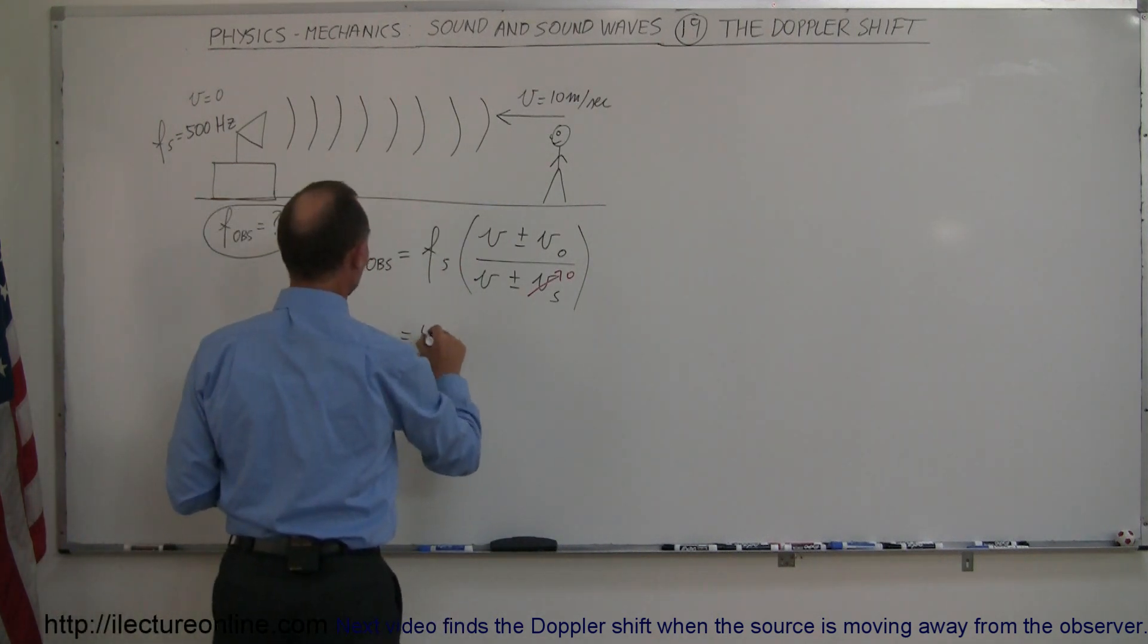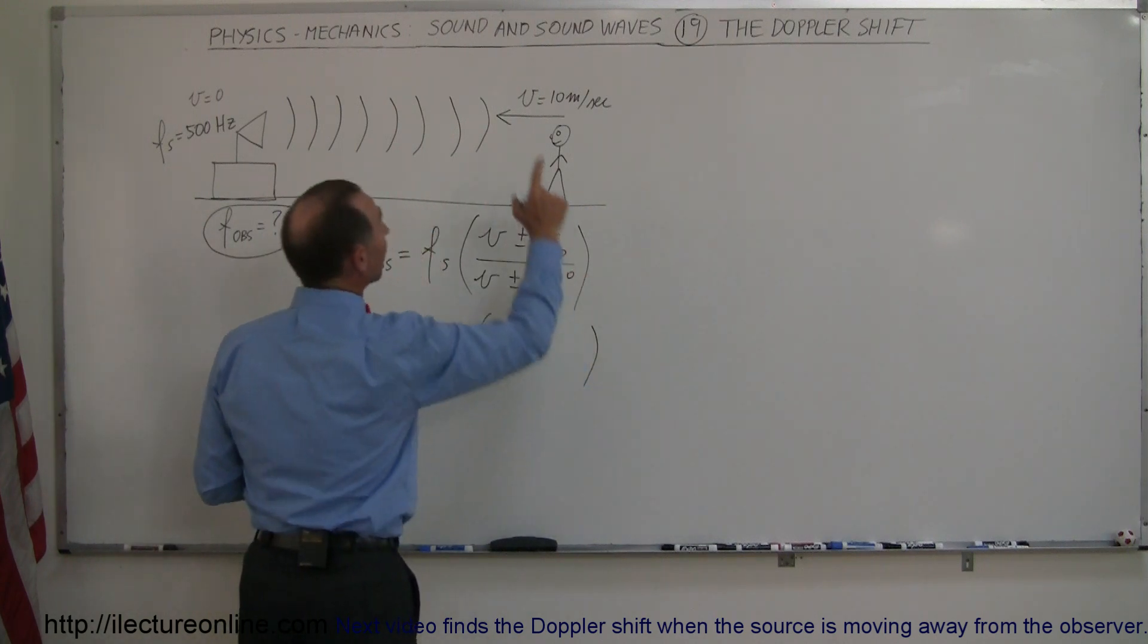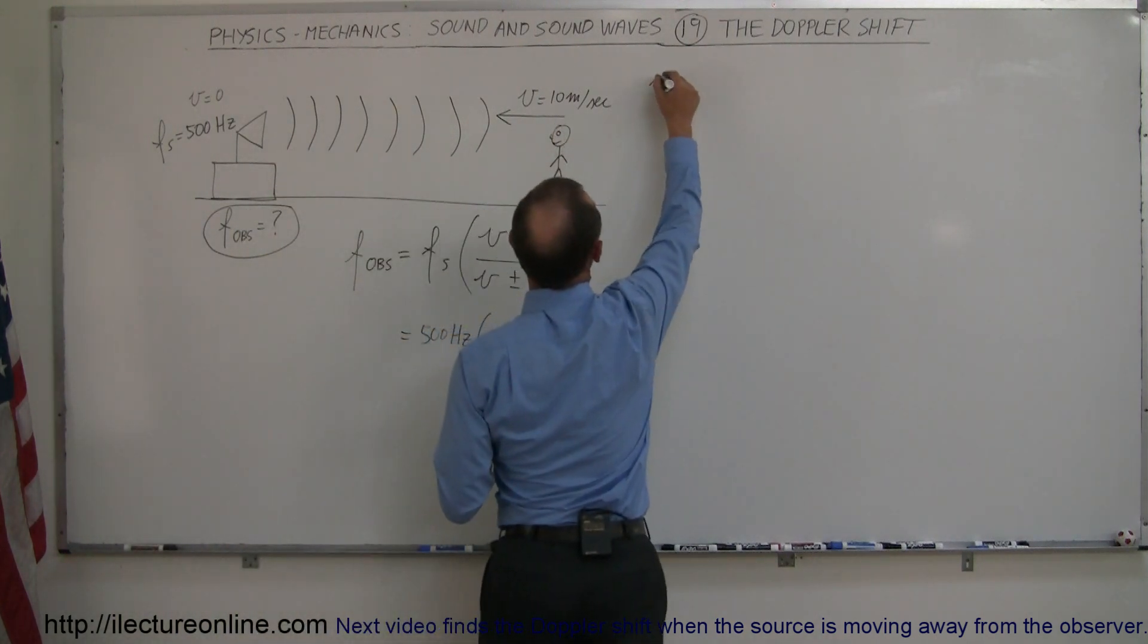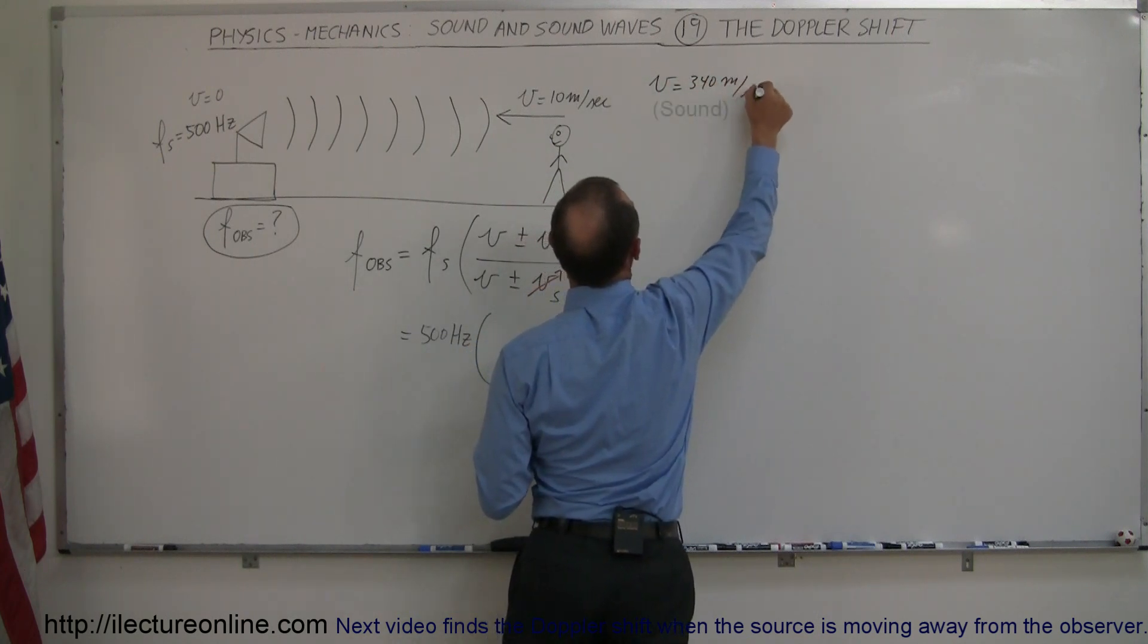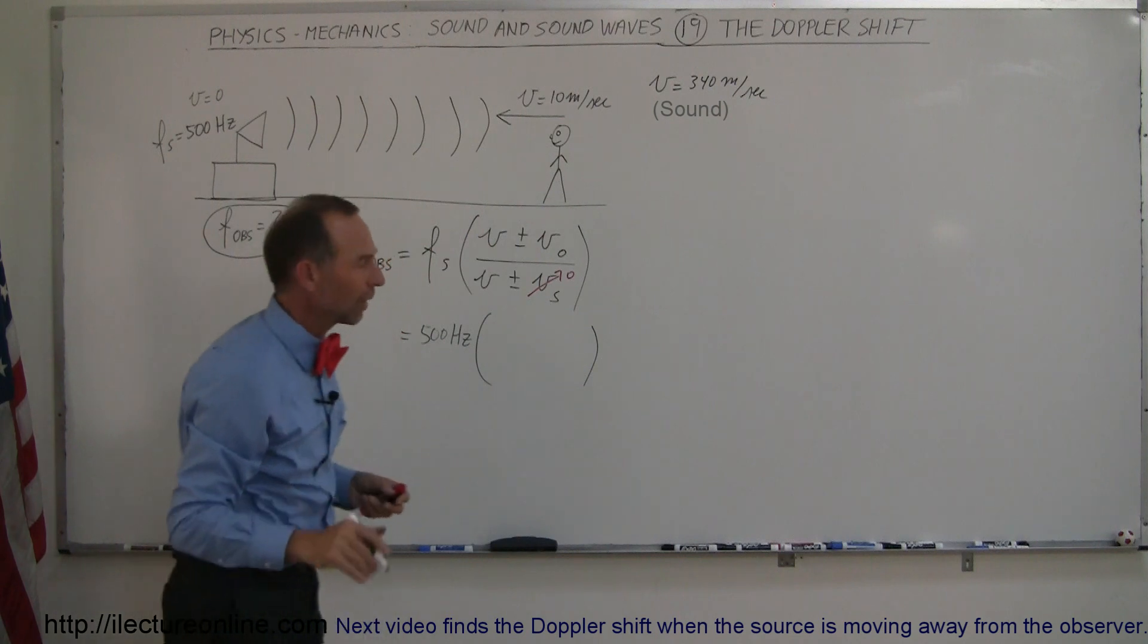So this is equal to 500 Hertz times the velocity of sound. I didn't give that to you but let's make it 340 meters per second. That's typical velocity around room temperature.